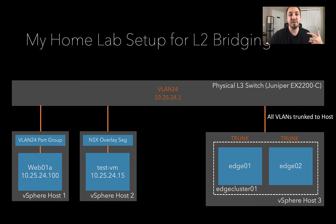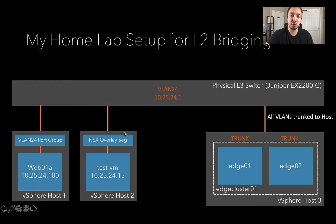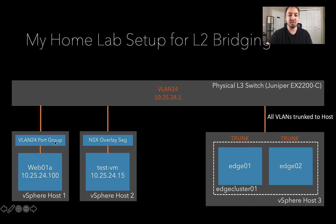Hey everyone, we're back. In the last video I ran you through what layer 2 bridging is and how it works and how my lab is set up. Now we're going to go into it - we're going to bridge from this legacy VLAN 24, regular networking with no NSX, and we're going to create a new overlay segment. If we've done our jobs right, we should have layer 2 bridging enabled on this edge cluster, allowing us to translate between the overlay segment and the traditional VLAN segment.